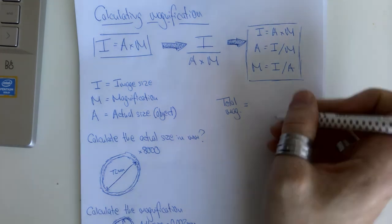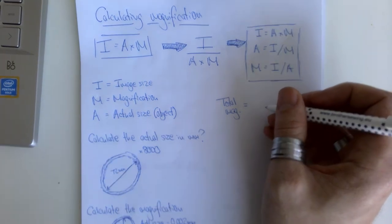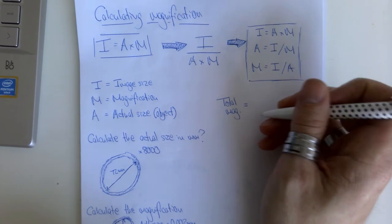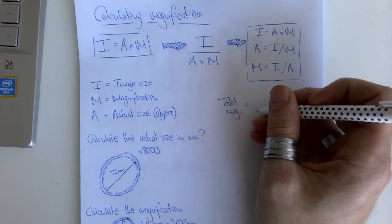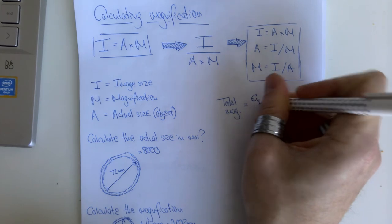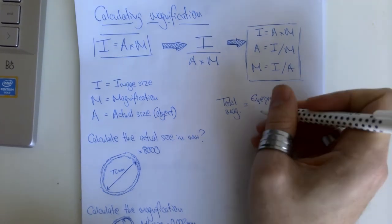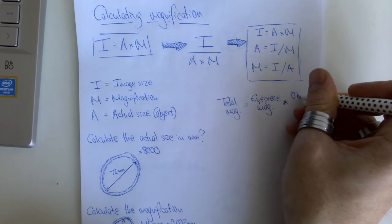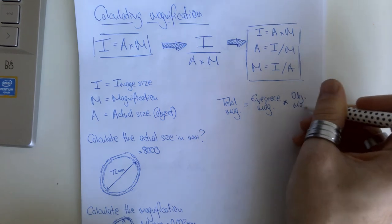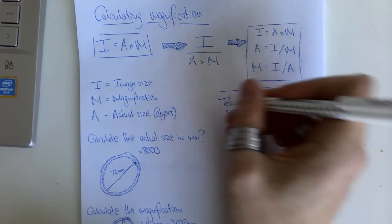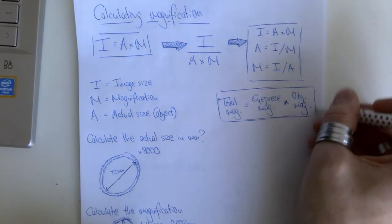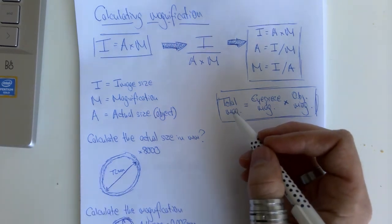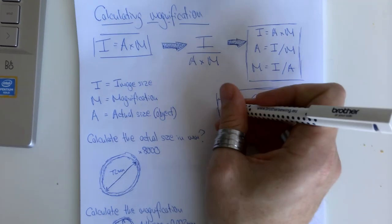There is another reference to calculating magnification worth being familiar with: the total magnification produced by a light microscope. That is calculated by taking the magnification of the eyepiece lens, which is usually times 10, and multiplying it by the magnification of the objective lens being used — usually times 4, times 10, or times 40. Multiplying those together gives you the total magnification produced by an image on a microscope.